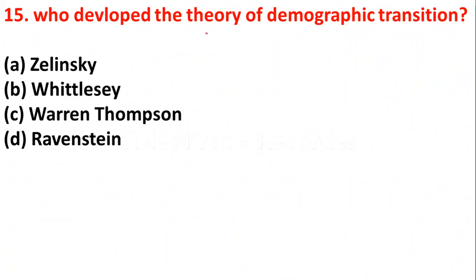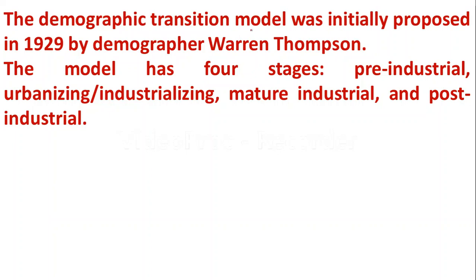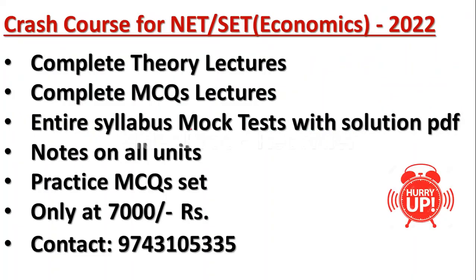Question 15: Who developed the theory of demographic transition? The right answer is option C — Warren Thompson. The demographic transition model was initially proposed in 1929 by demographer Warren Thompson. His model had four stages: pre-industrial, urbanizing or industrializing, mature industrial, and post-industrial.